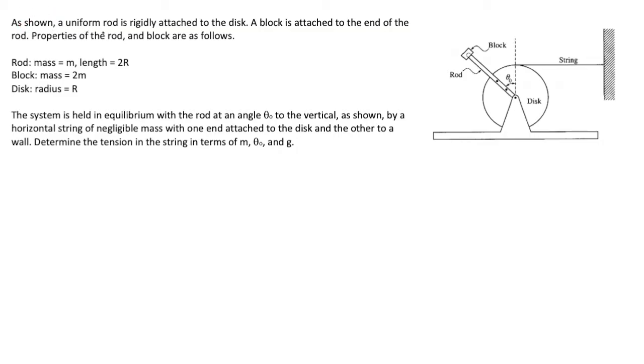As shown, a uniform rod is rigidly attached to the disc. A block is attached to the end of the rod. We have some properties of the rod and the block as follows. The rod has a given mass m and length 2R, the block has mass 2m, and the disc has radius R.